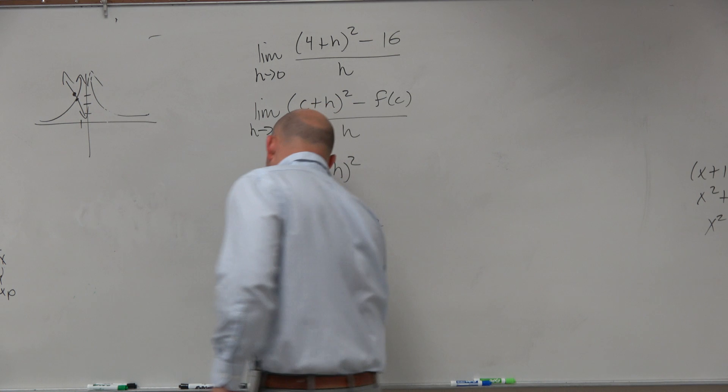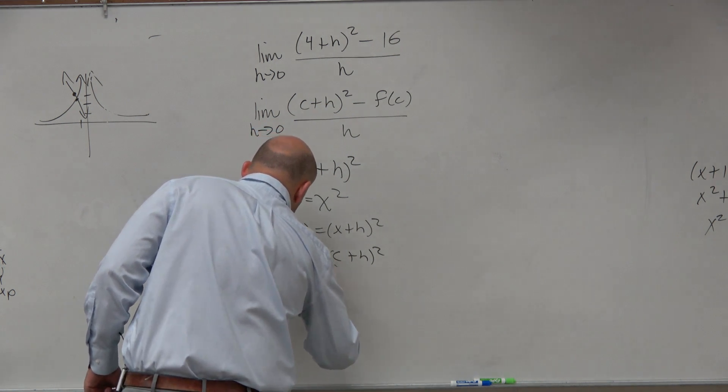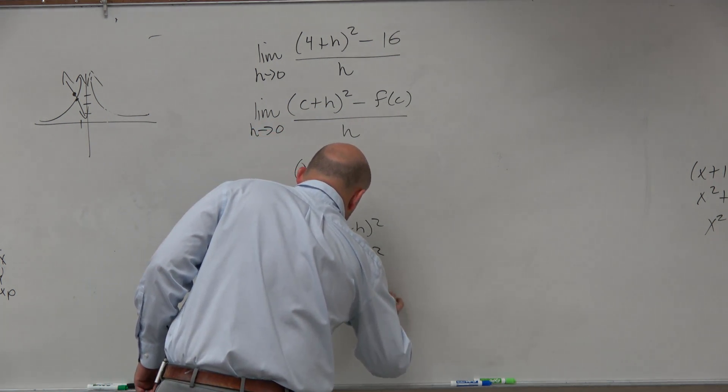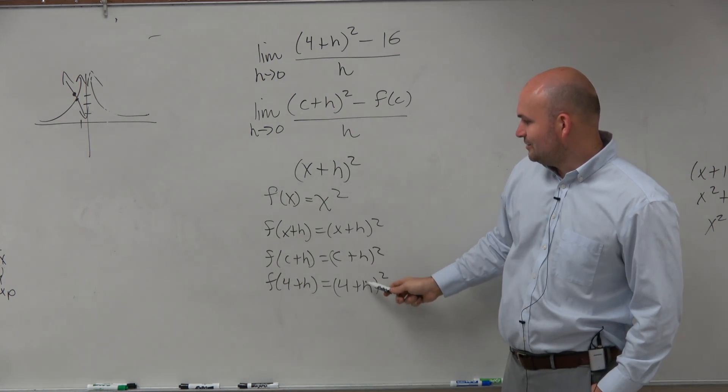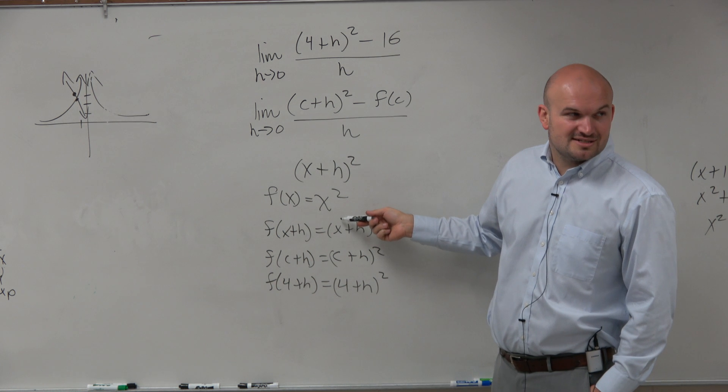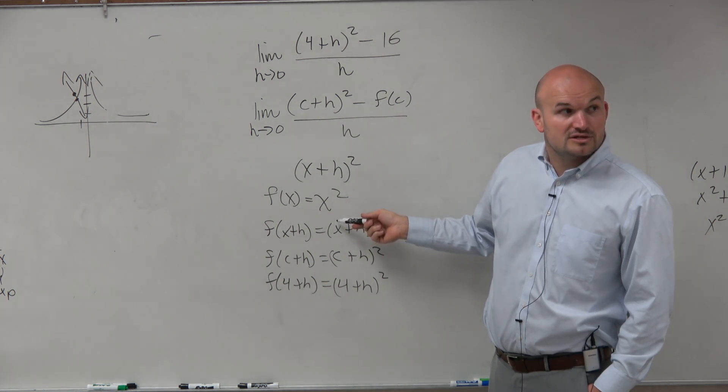If I did F of 4 plus H, that equals 4 plus H squared. So what I'm trying to tell you is, this, kind of reverse engineered, is really just X squared. Do you guys agree with me?